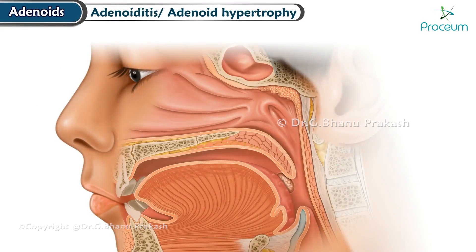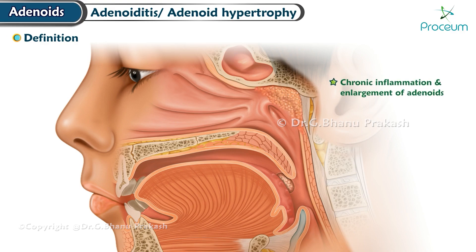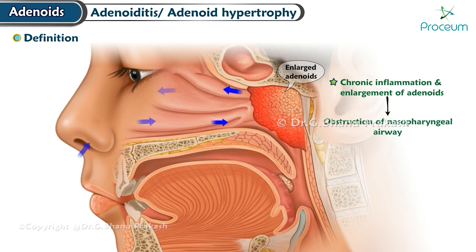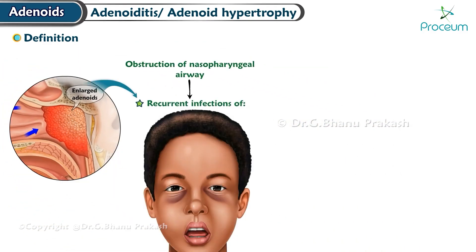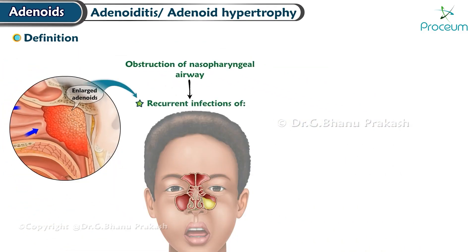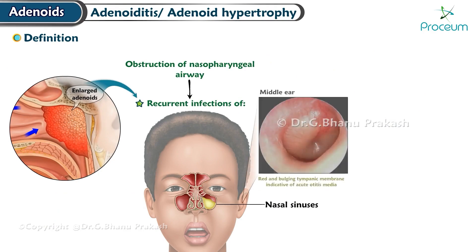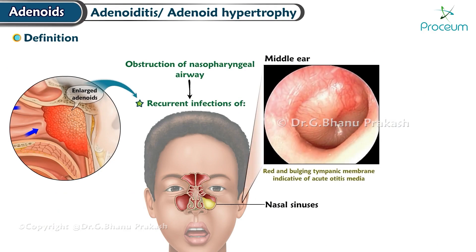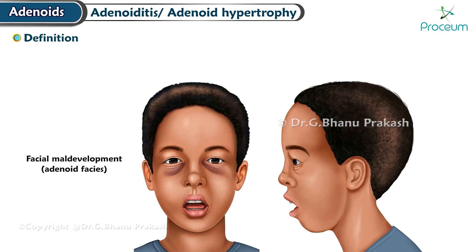Adenoiditis and adenoid hypertrophy: definition. Chronic inflammation and enlargement of the adenoids refers to a condition where the adenoids become swollen, leading to obstruction of the nasopharyngeal airway. This obstruction can result in recurrent infections of the nasal sinuses and middle ear (otitis media), as well as potential facial maldevelopment known as adenoid facies.